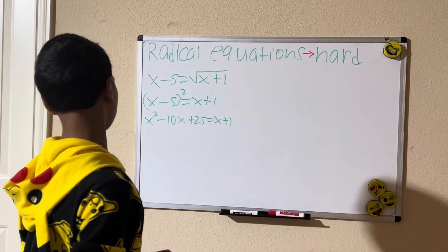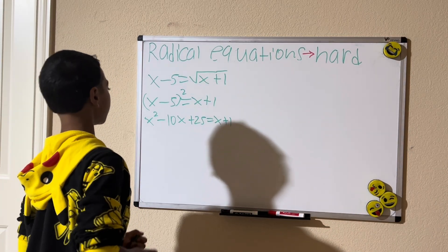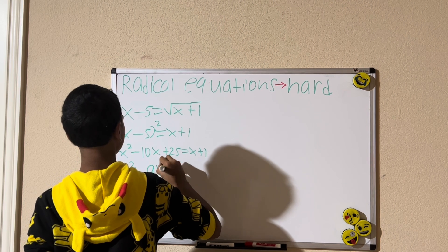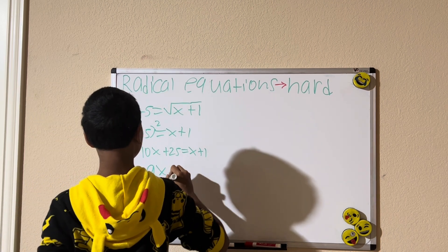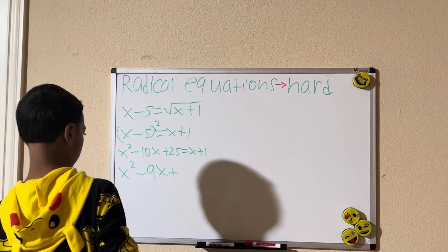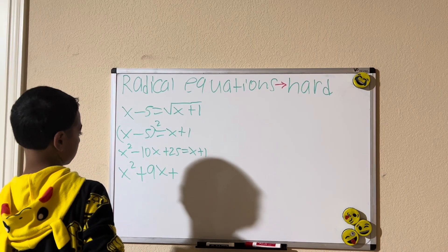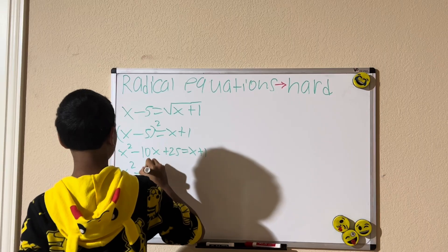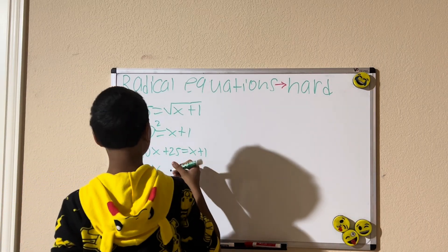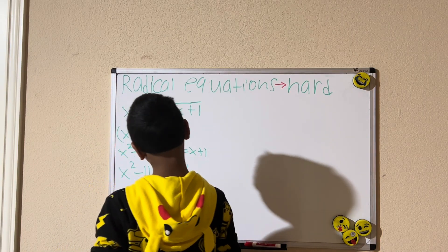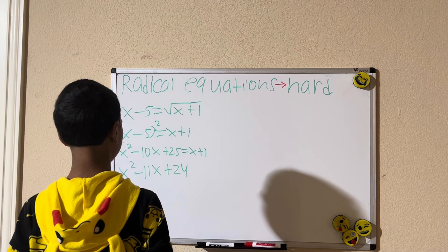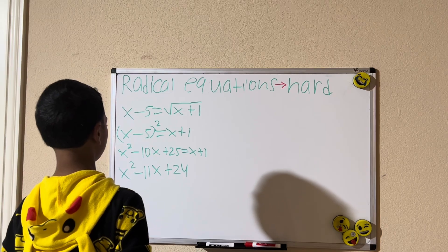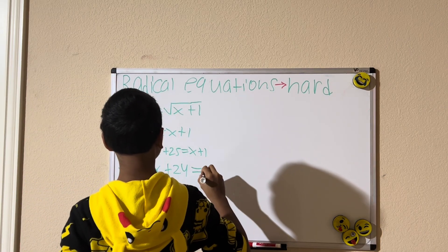Expanding the left side gives us x squared minus 10x plus 25 equals x plus 1. Now let's subtract x from both sides and subtract 1 from both sides. That gives us x squared minus 11x plus 24 equals zero.